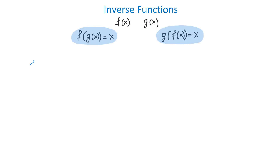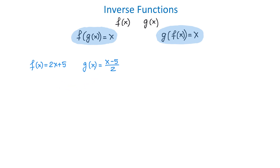For example, let f of x be equal to 2x plus 5, and g of x is equal to x minus 5 over 2. These two functions are inverses of each other, and we can verify this using composition.